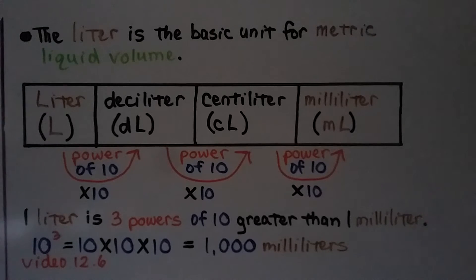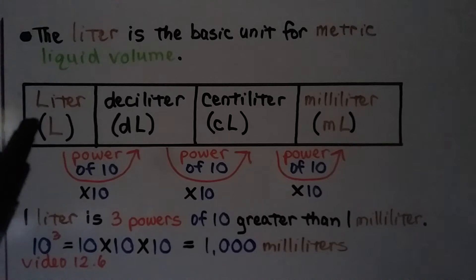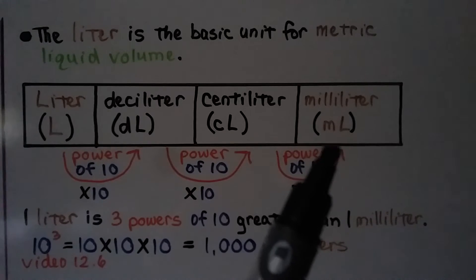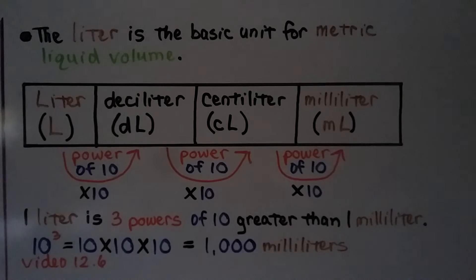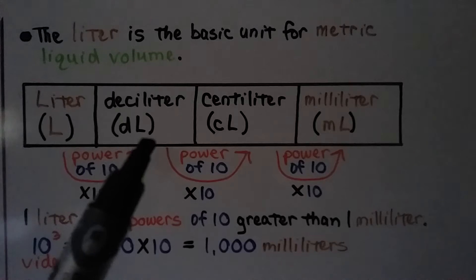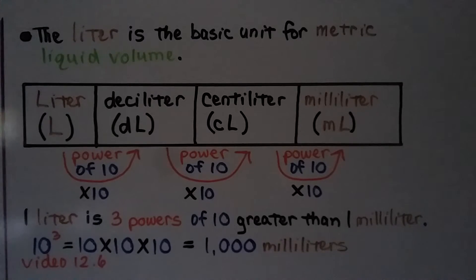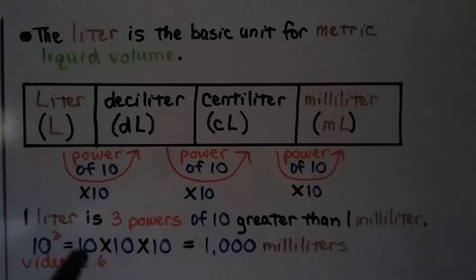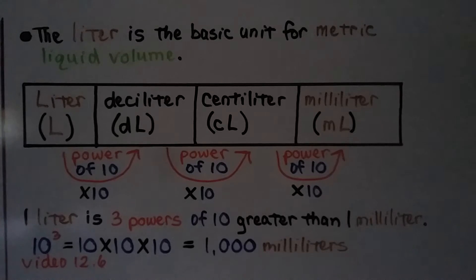The liter is the basic unit for metric liquid volume. Comparing a liter (L) to a milliliter (mL), there are three powers of ten between them — 10 to the third power. Ten times ten is one hundred, and one hundred times ten is one thousand. So one liter is equal to one thousand milliliters.